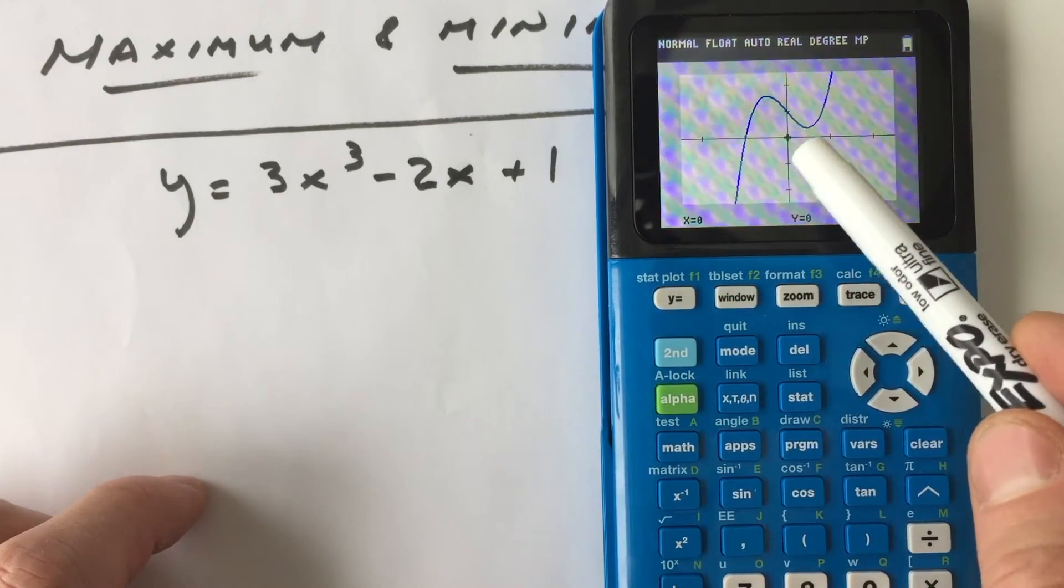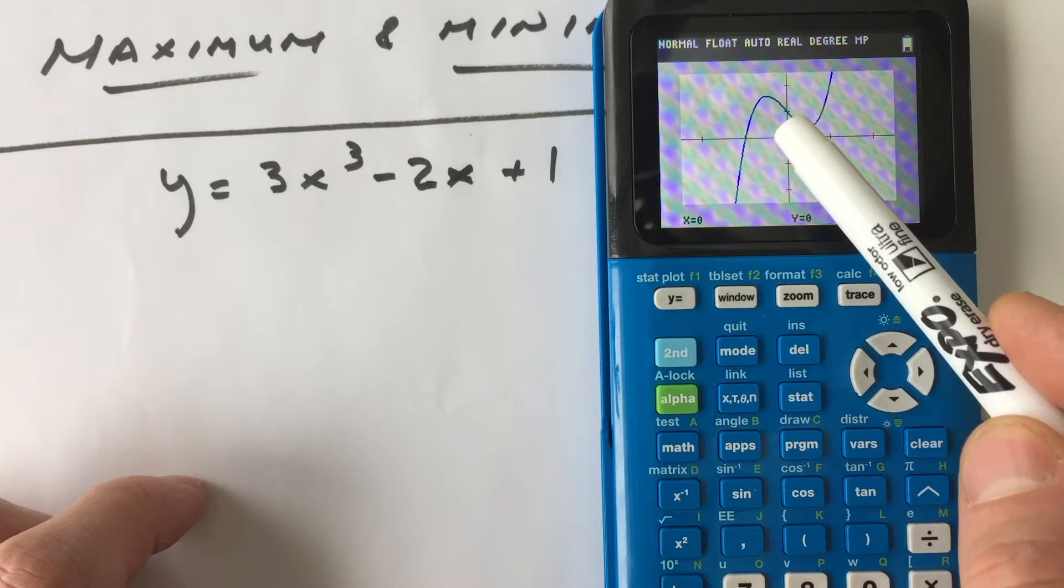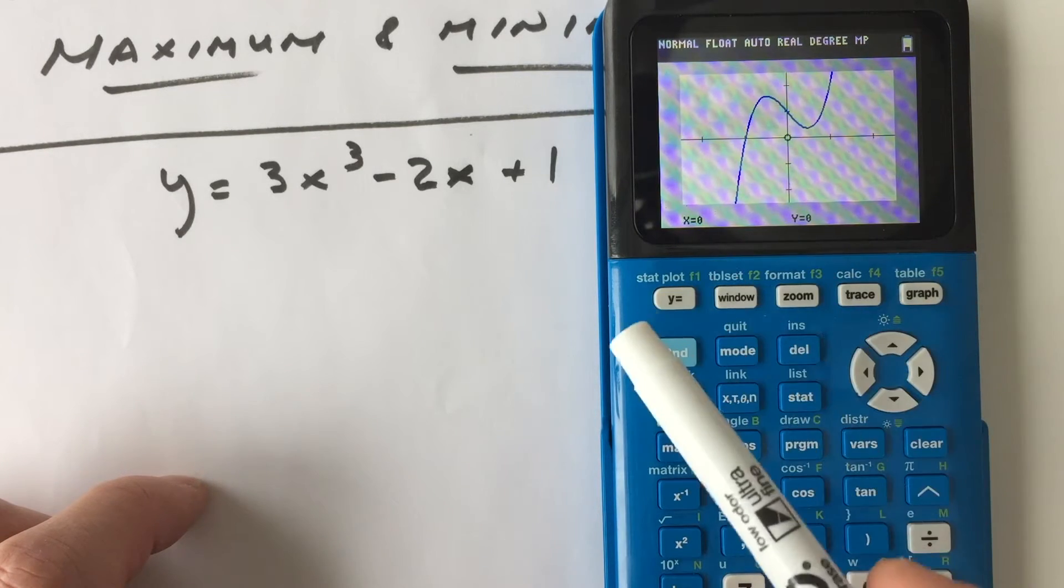Now over here in the valley to the right, this is the relative minimum. So this is the lowest point relative to the points on either side of it.